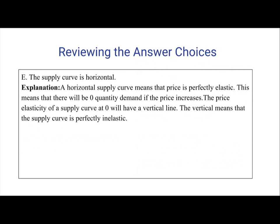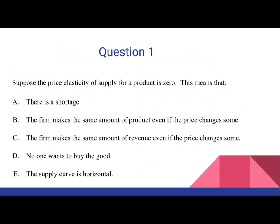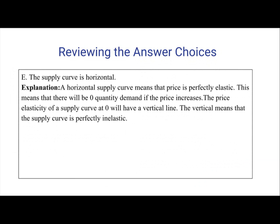Answer E: the supply curve is horizontal. A horizontal supply curve means that the price is perfectly elastic, not inelastic. So when we go back to the question, it's asking the price elasticity of the supply product is zero, which means it is an inelastic product — not elastic, not perfectly elastic.